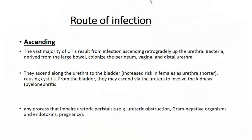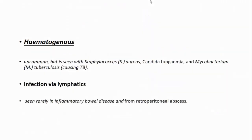UTI can develop via several routes. The ascending route is most common: bacteria from the colon, vagina, or perineum get into the urethra and ascend to the bladder and upper tract. Hematogenous spread is rarely seen but can occur with Staphylococcal septicemia, fungemia, and Mycobacterium tuberculosis. The lymphatic route is also rare but can be seen in inflammatory bowel disease and retroperitoneal abscesses.